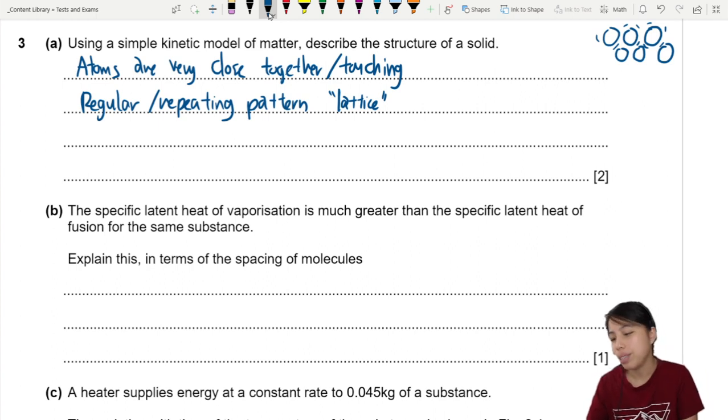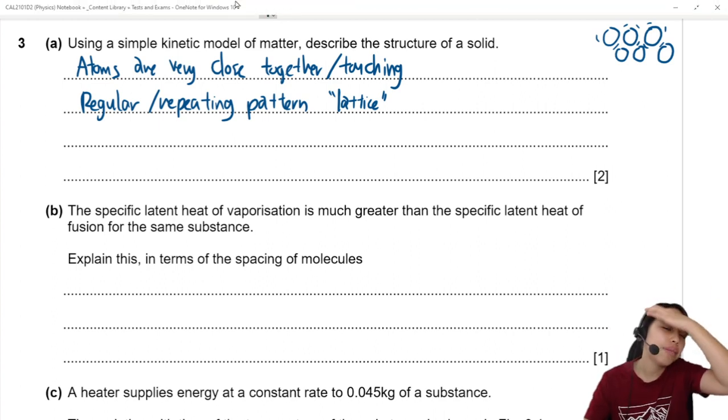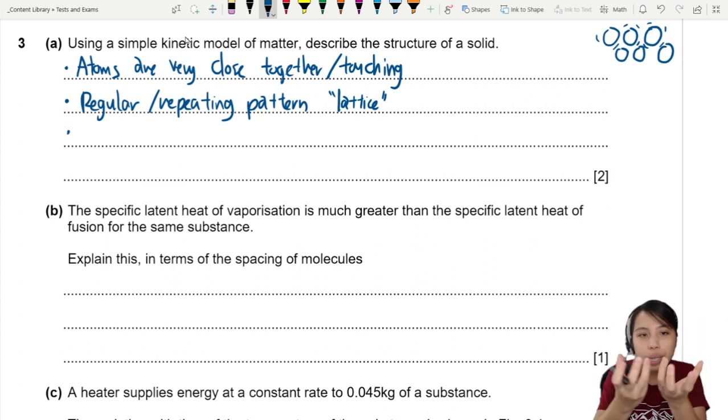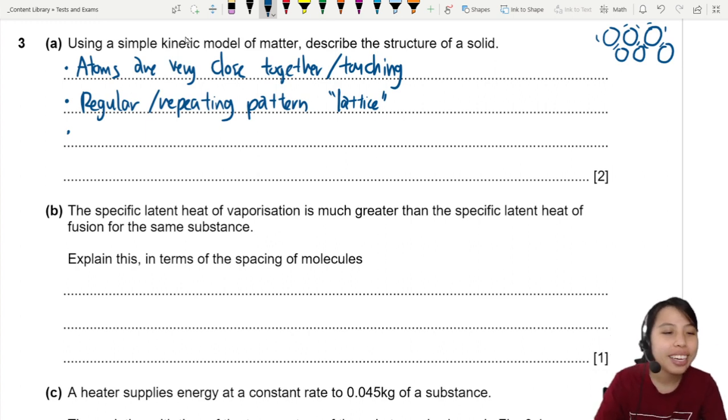If you take chemistry, then you know lattice. Physics, we don't know. But never mind. It's okay if you write that. You can also mention the vibrating in the spot. Your atoms don't fly around. They just stay at spot and just vibrate. So you can say that they vibrate about their fixed point or fixed position.